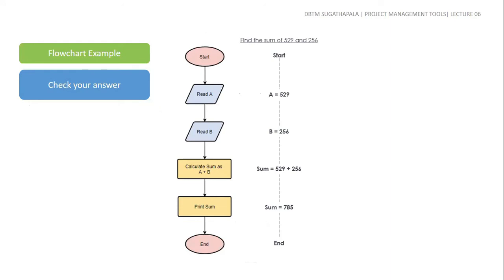We are going to find the sum of 529 and 256. We start the process, then read input values A and B. We calculate the sum as A plus B, then print the sum, and finally end the process.